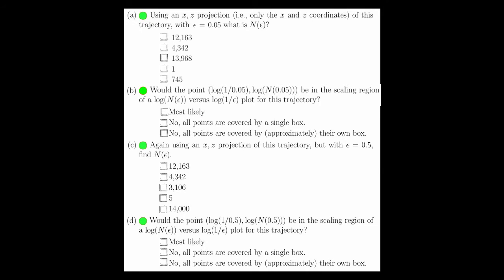With the function I just showed you, you can now answer questions A through D. If you run this code using an epsilon of 0.05, using an XZ projection of the trajectory located at the link in this homework, you get that it takes 13,968 boxes.